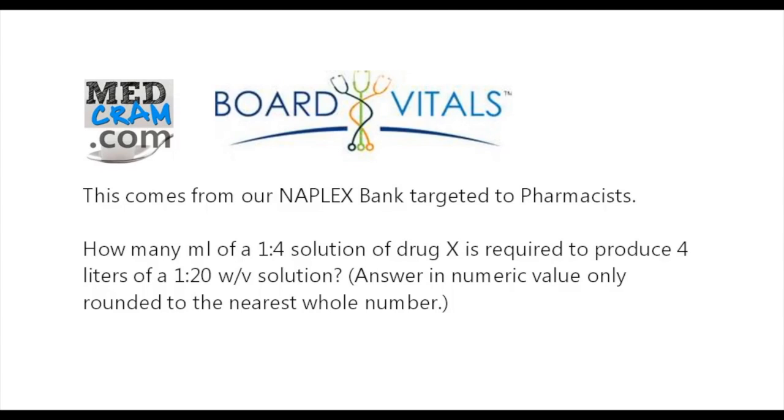So let's revisit this question again. How many mLs of a solution, specific solution, a 1 to 4, that would be a 25% solution, of drug X is required, in other words, is needed at the beginning, to be diluted out to produce 4 liters of a solution which is more dilute? So in other words, we're going from a 25% solution down to a 5% solution weight divided by volume. And so the question is, how many mLs are we going to need to make that happen?